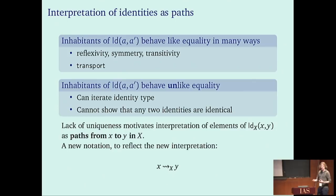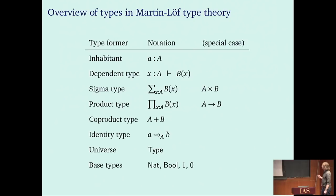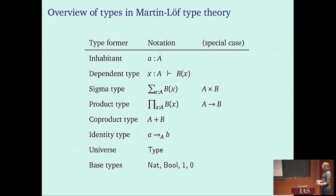At this point there are basically three options: do nothing, add an axiom saying any two terms of an identity type are identical, or do what Vladimir suggested — add the univalence axiom, which is incompatible with the second option. We will think of elements of identity types rather as paths from x to y. Instead of writing Id(x,y), I will now use a squiggly arrow to make you think of paths. This is an overview of the basic type theory that we will now turn into univalent foundations.